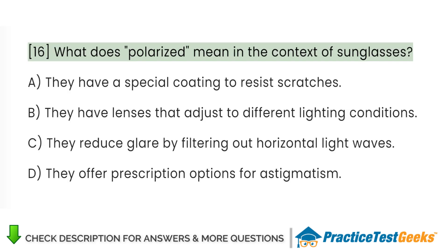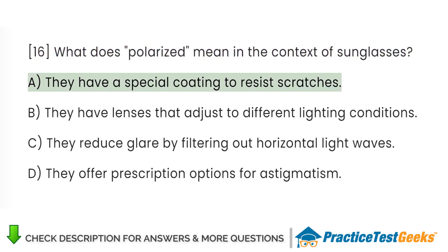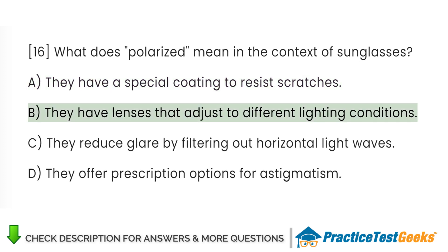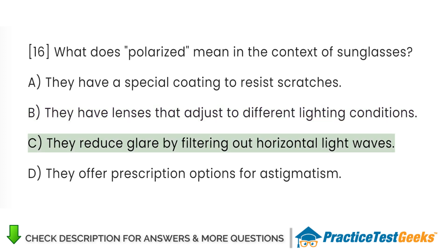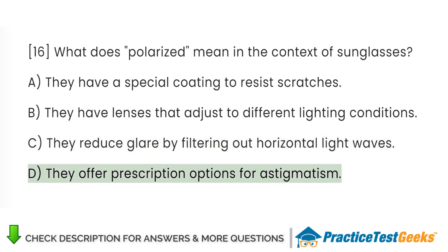What does polarized mean in the context of sunglasses? A. They have a special coating to resist scratches. B. They have lenses that adjust to different lighting conditions. C. They reduce glare by filtering out horizontal light waves. D. They offer prescription options for astigmatism.